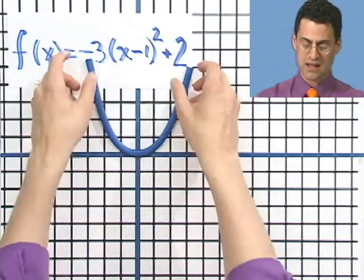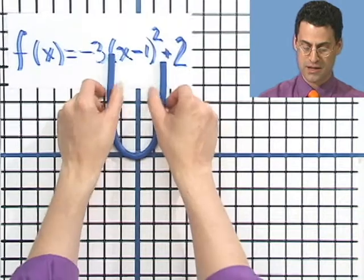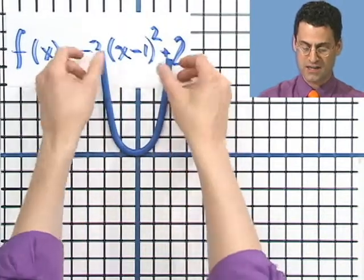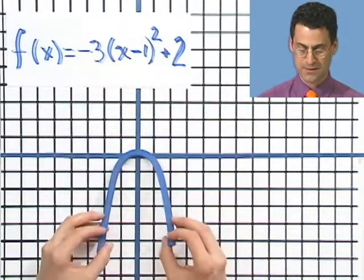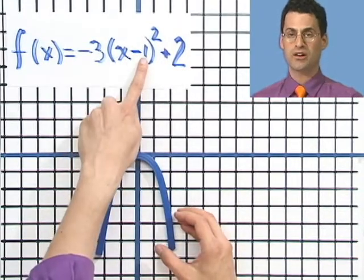And I saw minus 3 times x squared. The minus sign, well, let me do it this way. The 3 tightened me up, right? It made me steeper. The minus sign flipped me over the x-axis. So I've got that.